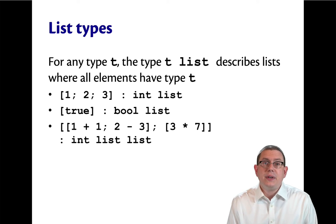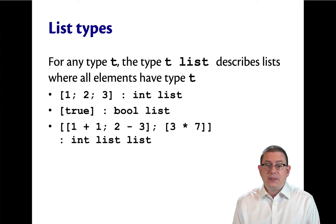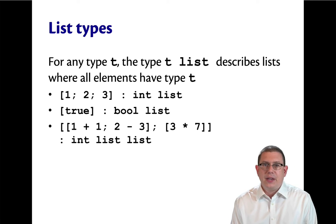List types involve a new keyword, which is list. So for any type T, the type T list describes those lists whose elements are all of type T. That's right, all the elements of the list must have the same type. This is not really a restriction. We will see later on how to have lists that have a mix and match of types.